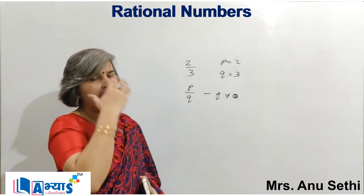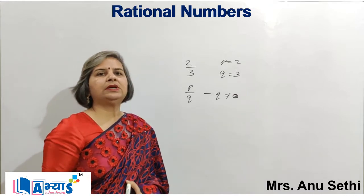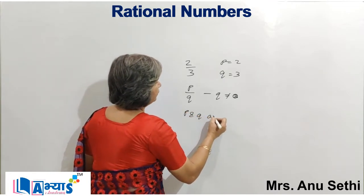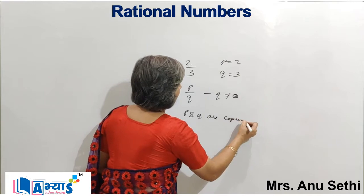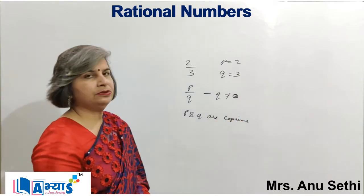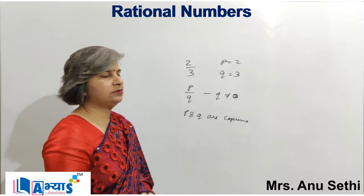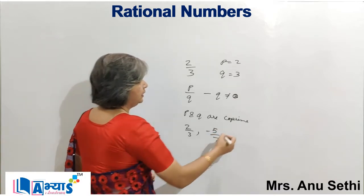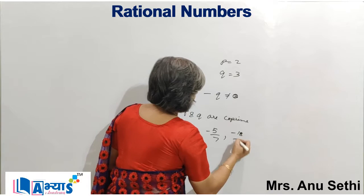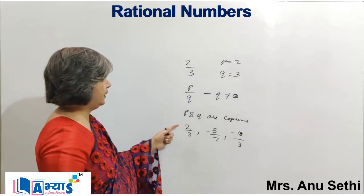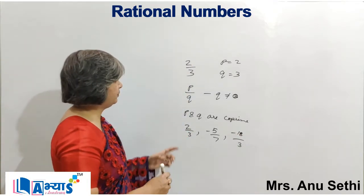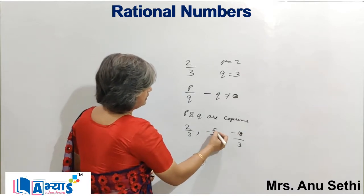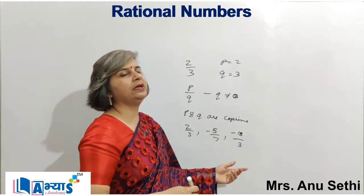So we can say that any rational number can be represented in the form of p by q. If p and q are co-prime — co-prime means they have no common factor other than 1 — then the rational number is in the simplest form. For example, 2 by 3 is a rational number in the lowest form because 2 and 3 are co-prime. Minus 5 by 7 is also a rational number because 5 and 7 are co-prime numbers.